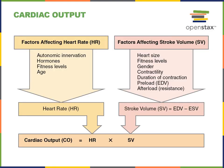Cardiac output is the amount of blood pumped by each ventricle in one minute. Cardiac output is the product of heart rate and stroke volume. The heart rate is the number of beats per minute — the number of cardiac cycles in one minute. And the stroke volume is the amount of blood pumped out by a ventricle with each beat.